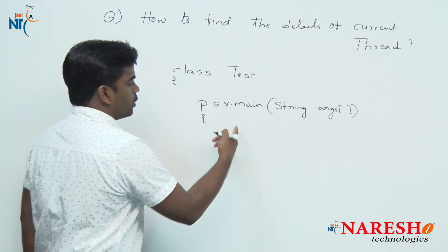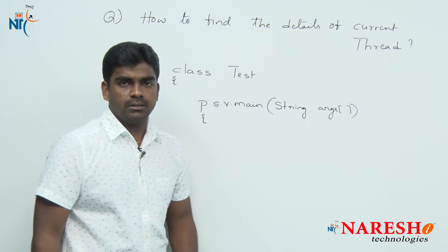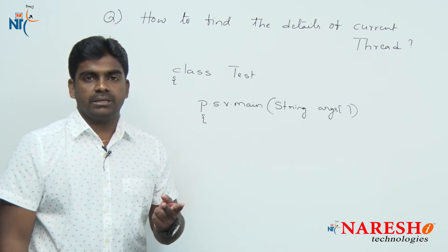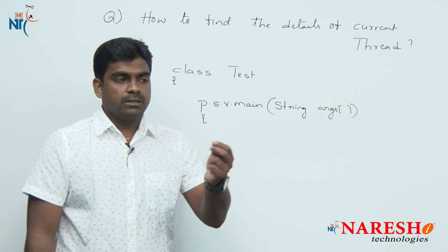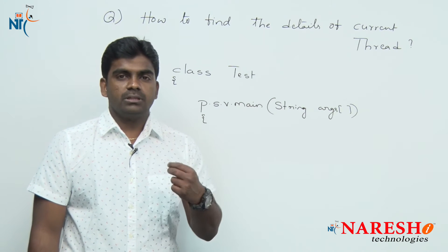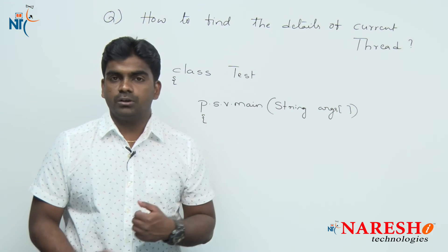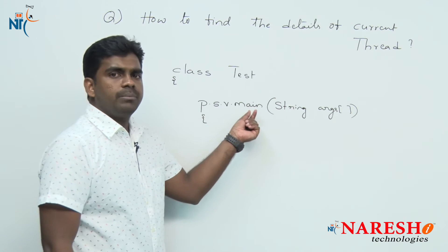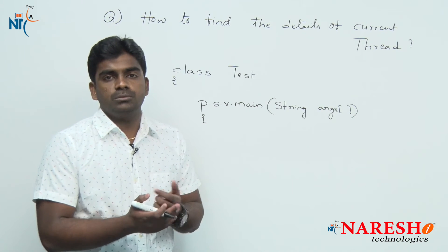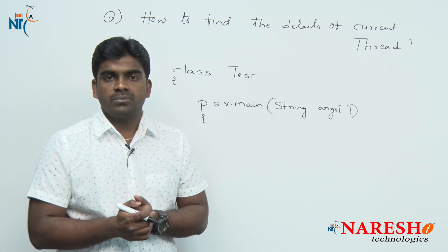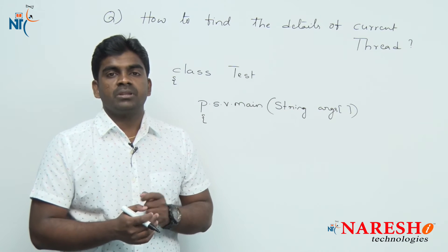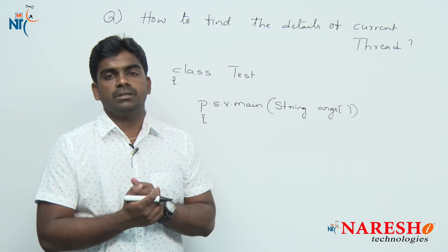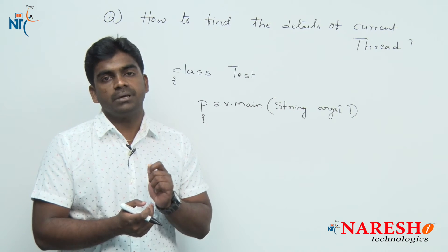We cannot directly call getName() method on the main thread — where is the main thread object? That is why in the Thread class there is one static method called currentThread().